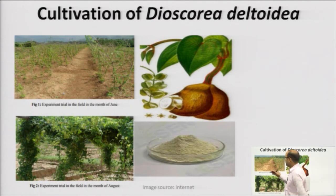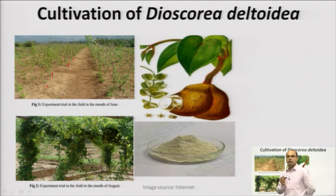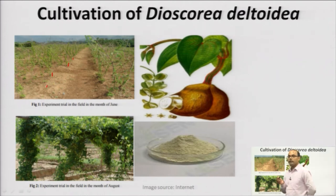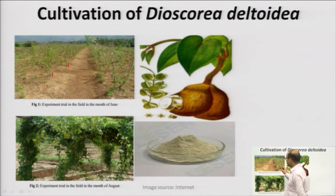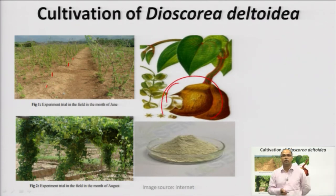You can see the fields where Dioscorea is cultivated. Because it is a creeper and a climber, it requires a support to grow. Since we are using the tubers or the dried rhizomes, this plant requires excellent growth — when the aerial part grows sufficiently, only then the tuberous roots are generated in the plant.